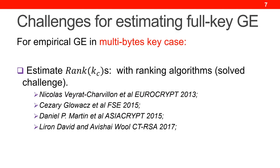However, if we want to estimate GE in the same way for a large-size key, two challenges need to be solved. The first one is how to calculate or estimate the rank of the correct key in the multi-byte case. This problem is solved in the previous literature. More specifically, after the first ranking algorithm invented by Veyrat-Charvillon et al. in EuroCrypt 2013, many follow-on ranking algorithms further improve the efficiency and accuracy of rank estimation, but computing the rank in a single dataset still takes some time for a multi-byte key.